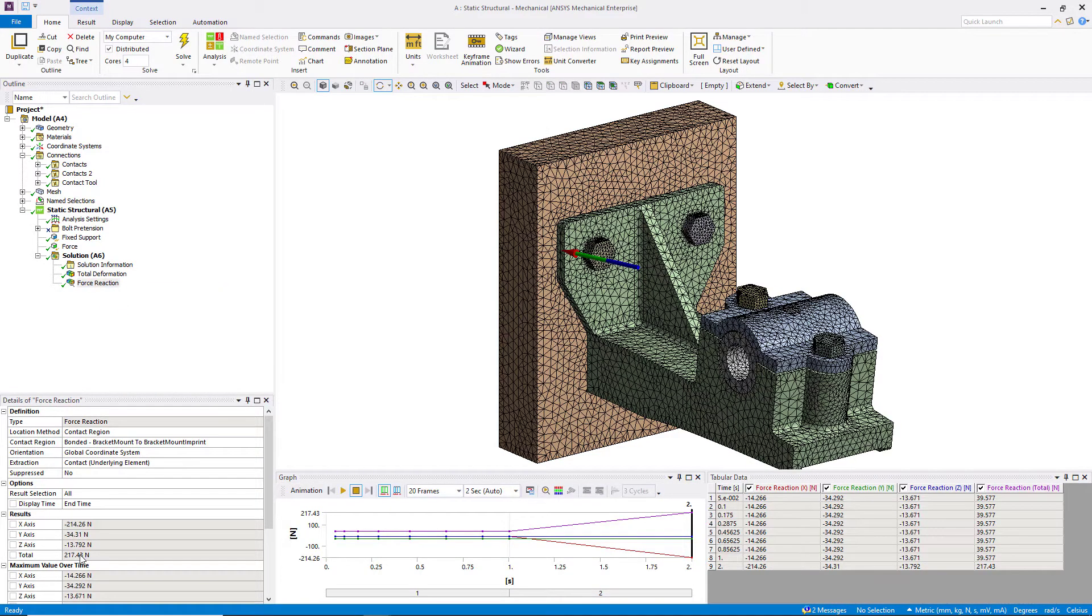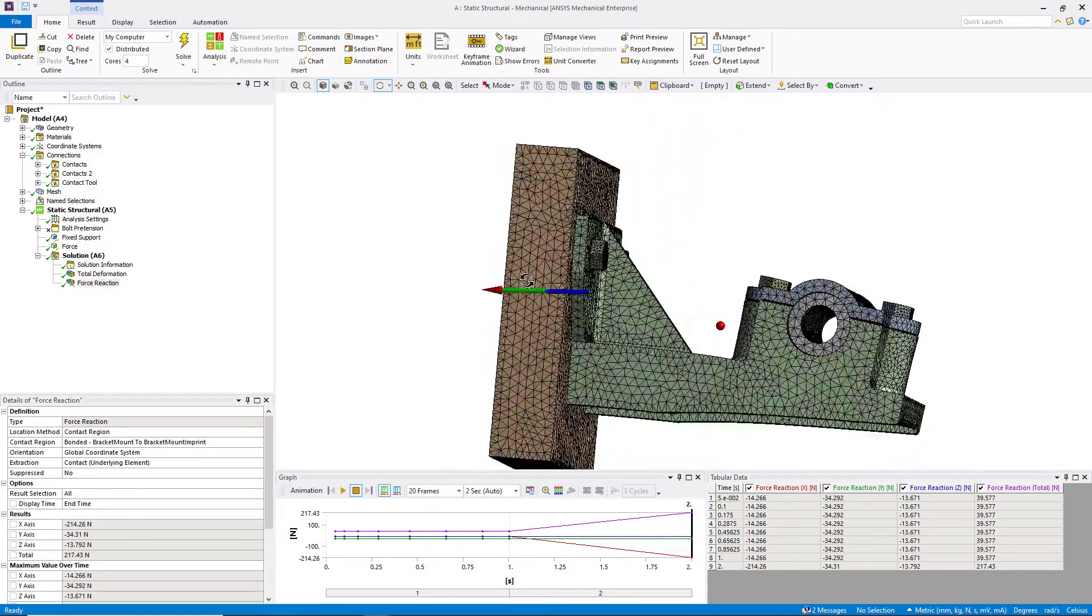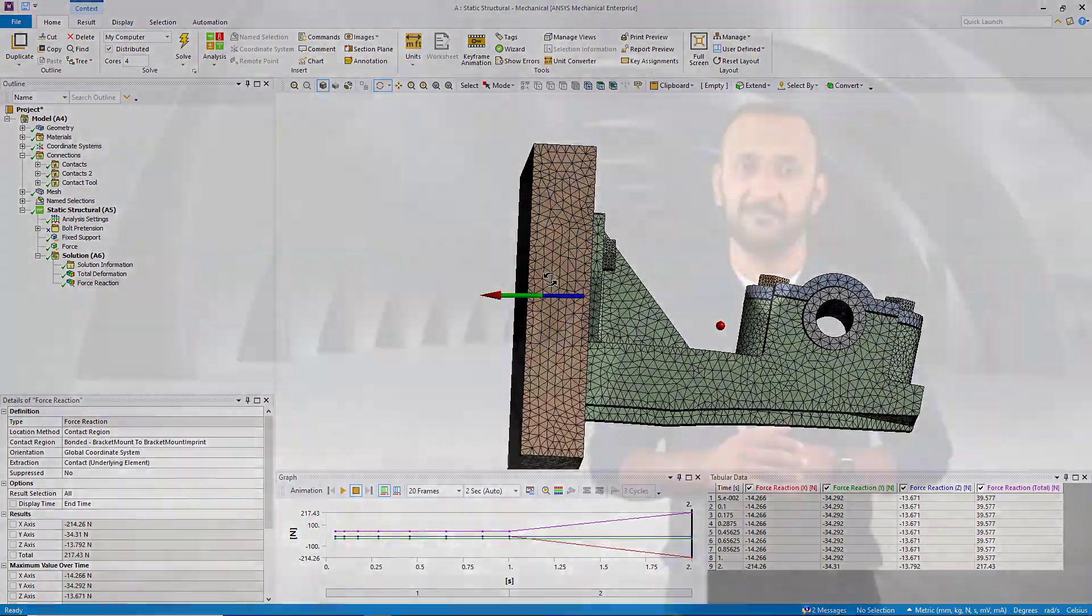So using these results to assess the impact of their pretension will lead us to wrong engineering decisions. This is just one example, but force reaction probes can be very handy in doing a sanity check to verify more simulation results.